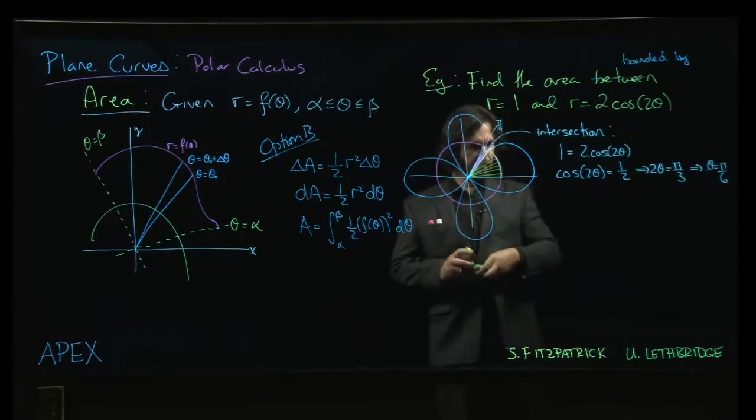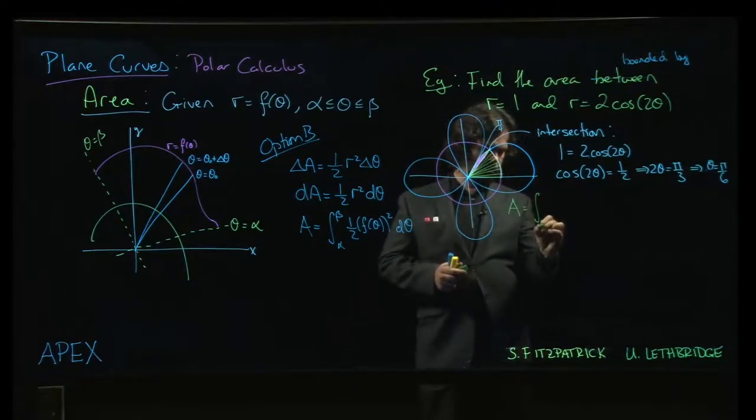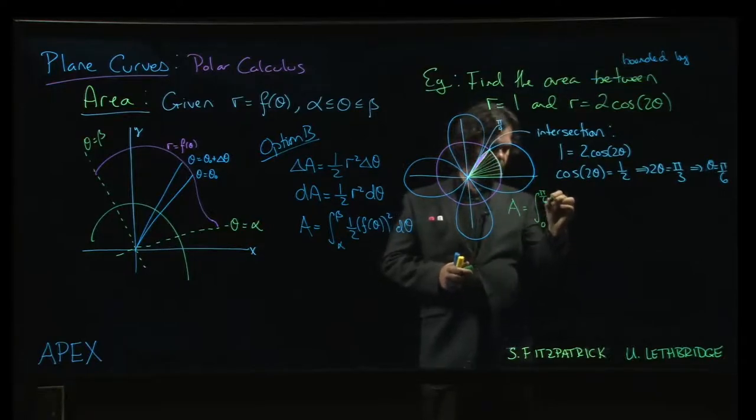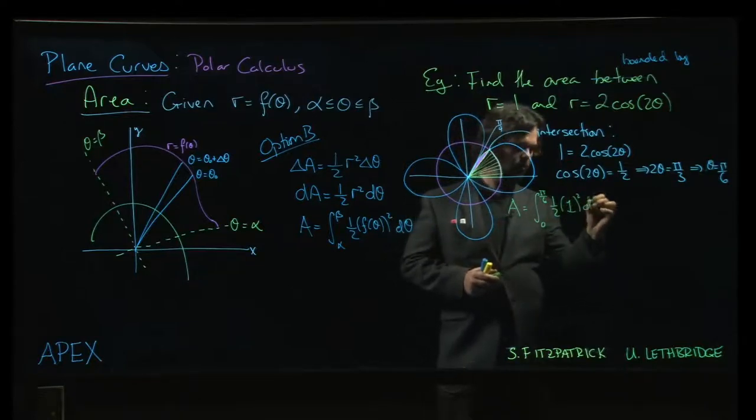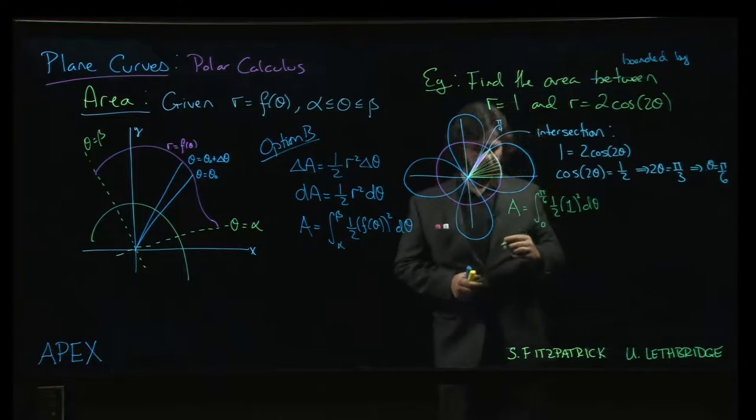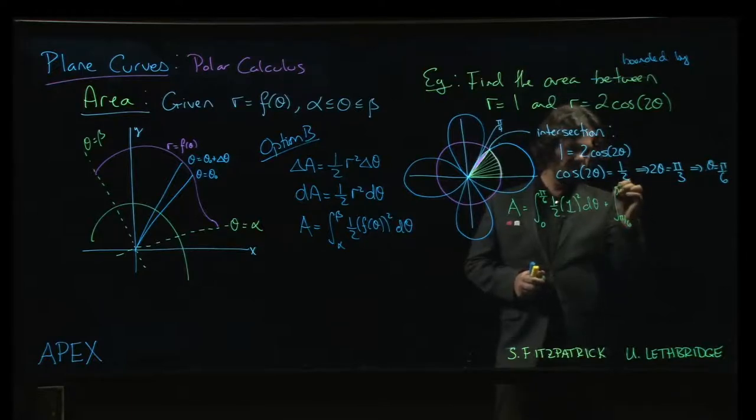So, the area that we're interested in then looks like this, plus it's going to be the integral from 0 to the intersection point, pi over 6, 1 half. So the first function of theta is just the constant function 1 squared. Not that squaring does anything. It times d theta.